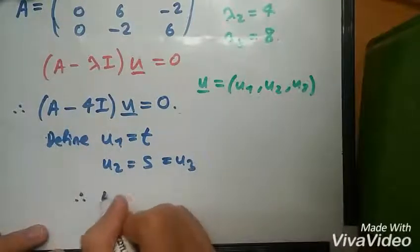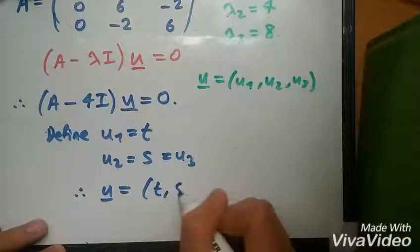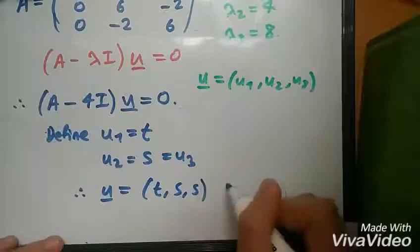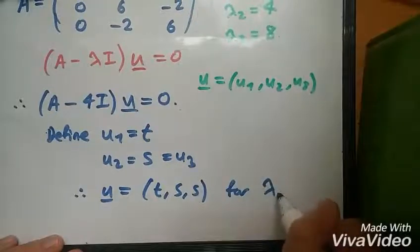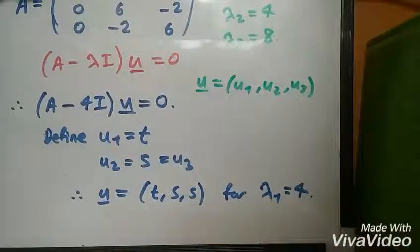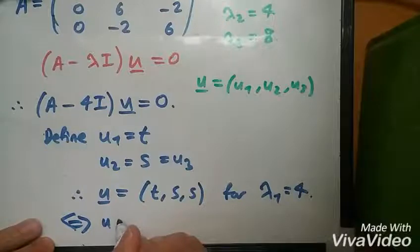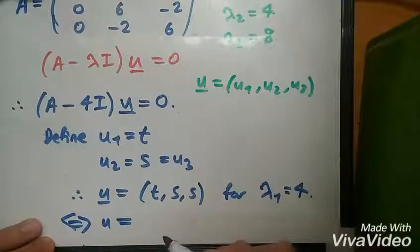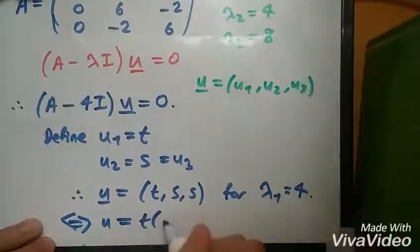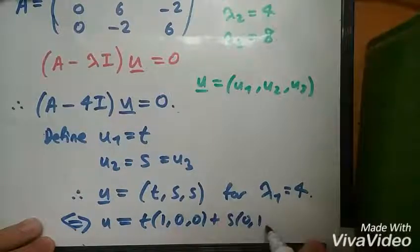So therefore, our eigenvector is simply (t, s, s) for the first eigenvalue λ1 = 4. And then really, just repeat the rest. To give an actual numerical solution, you can also write like this: u equals t(1, 0, 0) plus s(0, 1, 1).